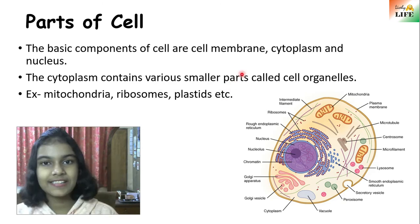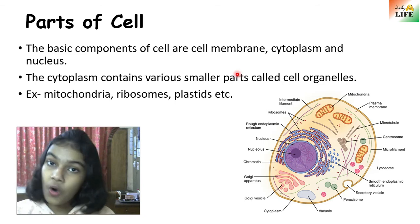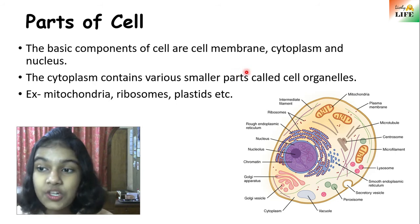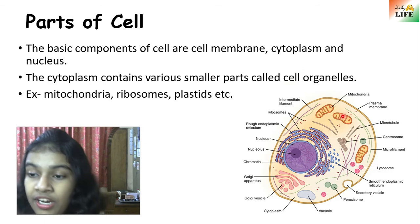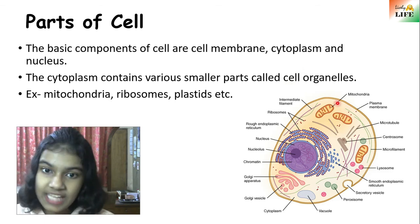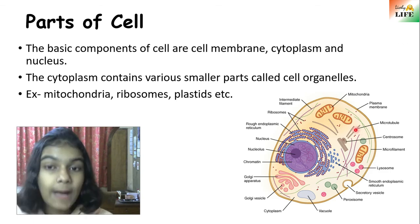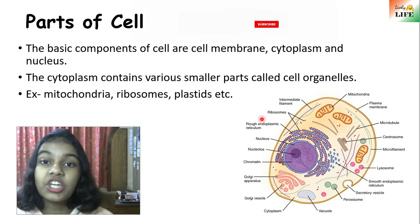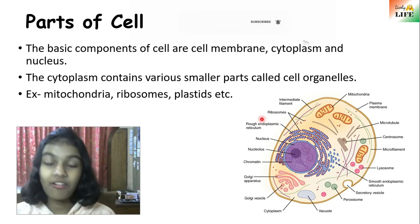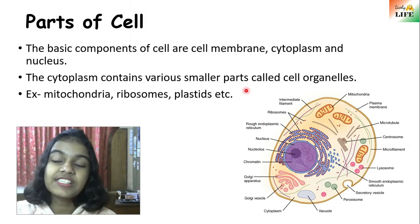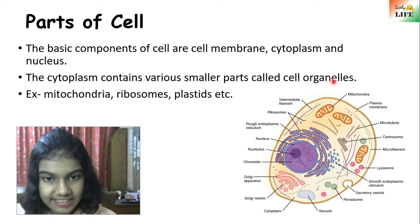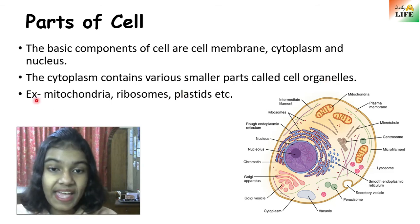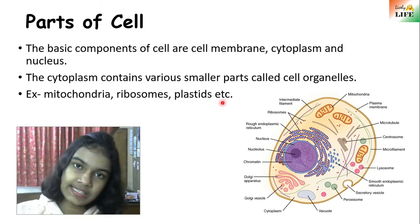Just like a human body is made up of many different types of organs, in the same way a single cell is made up of different organelles, known as cell organelles. Examples include mitochondria, ribosomes, plastids, and endoplasmic reticulum — these are the organelles, meaning the organs of the cell. The cytoplasm contains these various smaller parts called cell organelles.